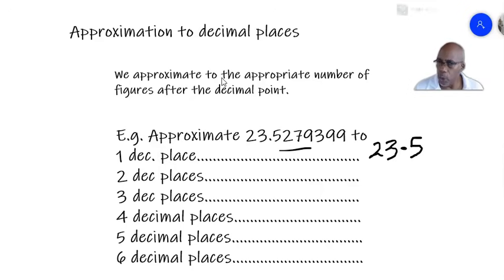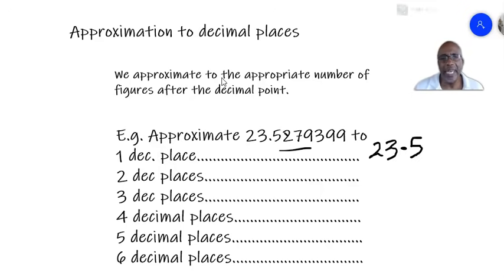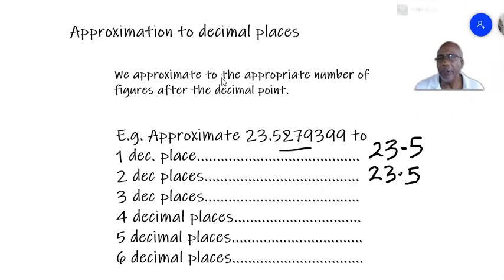Don't forget that rule: whenever you approximate to decimal places, look for the number after the number of places you want and see whether it is 5 or more. To two decimal places, we go to the 5 and then the 2. But since the digit after the 2 is 7 — which is greater than 4 — we increase the 2 to 3. So the answer is 23.53.